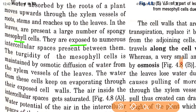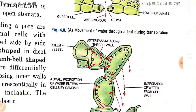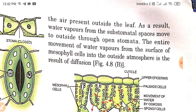These cells are exposed to numerous intercellular spaces between them. The turgidity of mesophyll cells is maintained by the osmotic diffusion of water from the xylem vessels to the leaves. The water from these cells keeps evaporating through their exposed cell walls. The air inside the intercellular spaces gets saturated, and the water potential of the air in the intercellular spaces becomes higher than that of the air outside the leaf. As a result, water vapors from the sub-stomatal spaces move to the outside through open stomata.